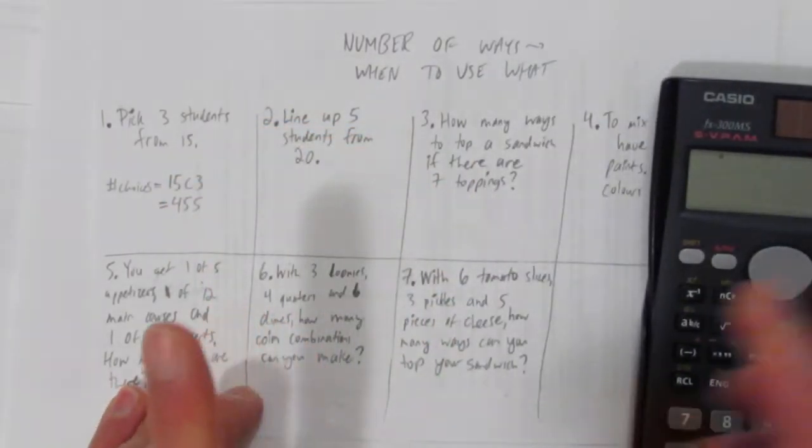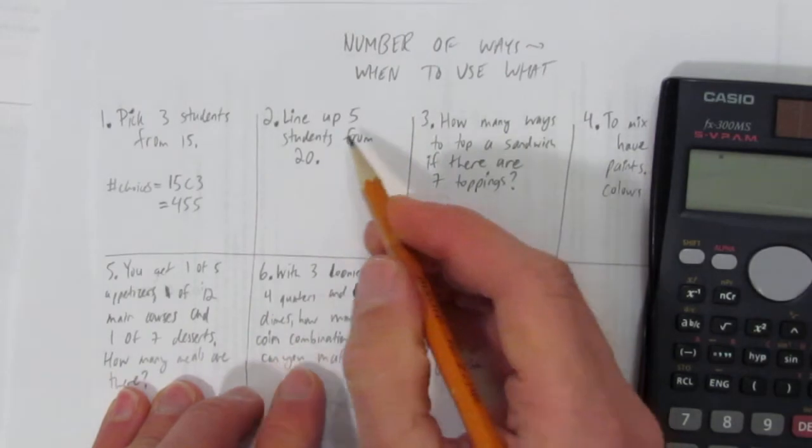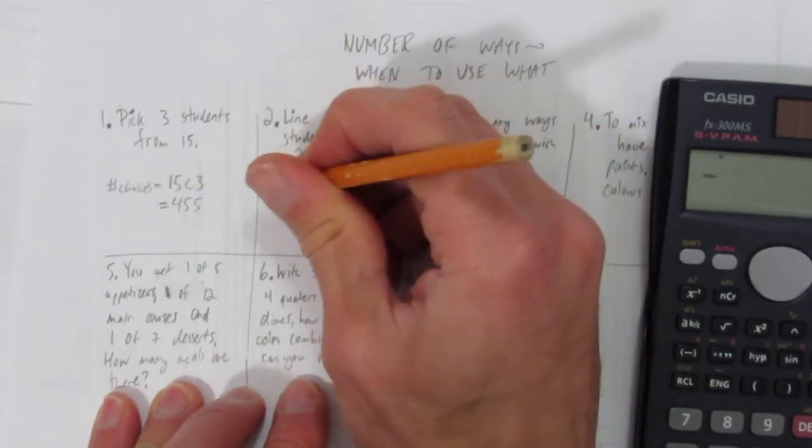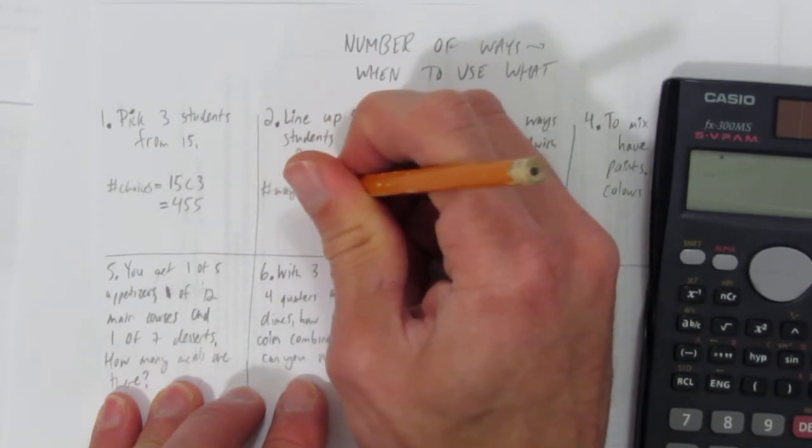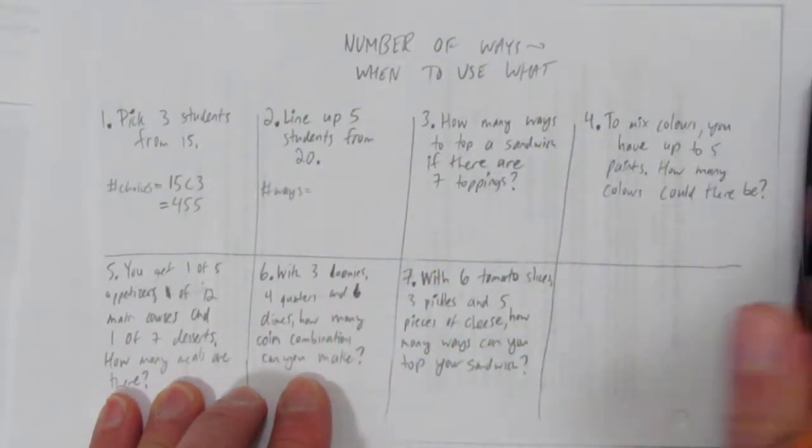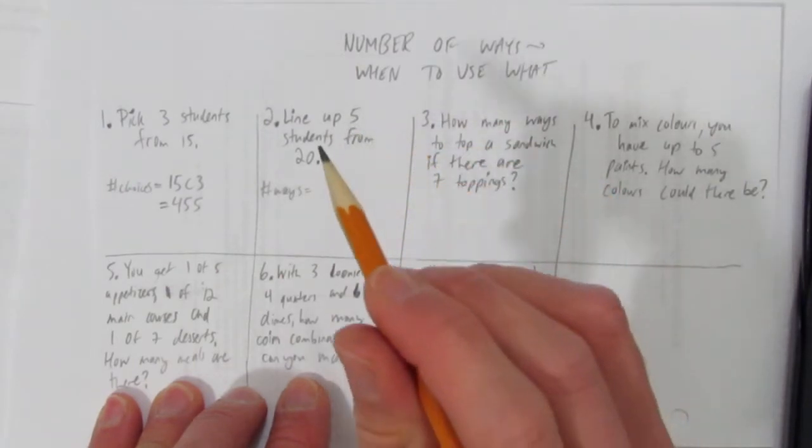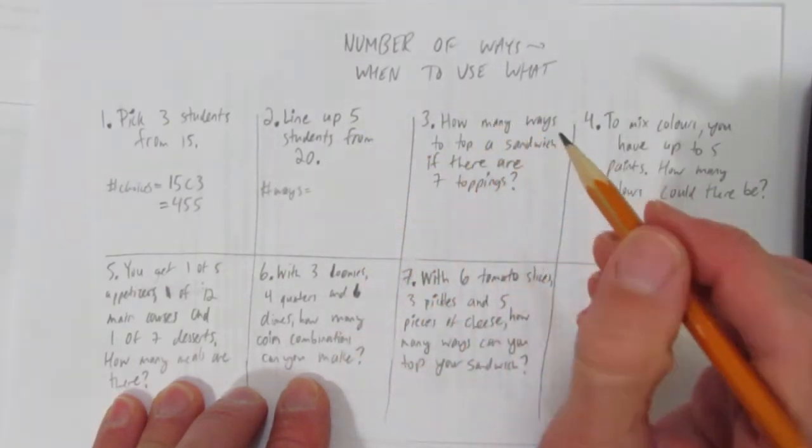Number two: line up students. As soon as you see line up, you should be suspecting what it's going to be. You can say number of choices or number of ways, it doesn't matter. In this situation, I have to line up students. If this time you go student one, then two, then three, then four,